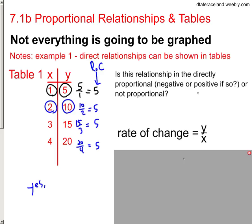Now, this question of is it negative or positive, look at your rate of change. Is it a positive number or a negative number? It's positive. So basically, it's a direct positive relationship that's proportional. And that's all that it is.